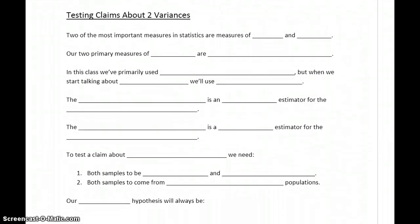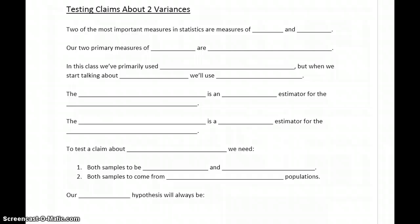First, we want to talk about testing claims about two variances. Keep in mind the two most important measures in statistics are measures of center and measures of spread.